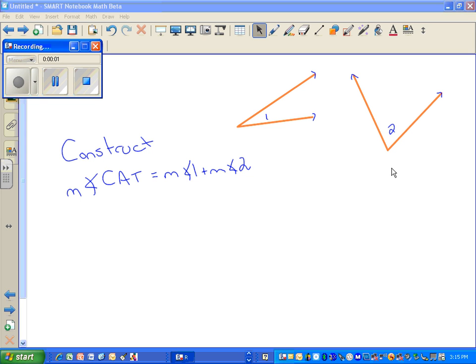We're going to add two angles together, and we're going to start by copying the first angle. Remember, the word construct means you must use your compass.